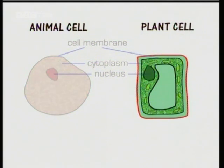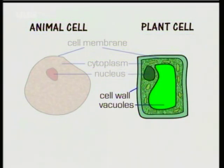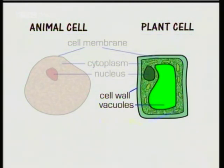Plant cells have some extra features. They have a cell wall outside the cell membrane for support and strength. They have permanent vacuoles containing cell sap, which exert pressure on the cell wall to keep the cells firm and help the plant keep its shape. And they have chloroplasts, which contain chlorophyll for photosynthesis.